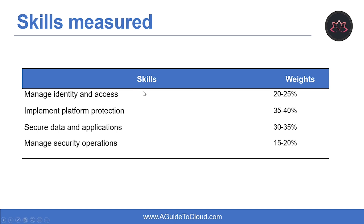When you sit for the exam, you will be measured on four primary skills: manage identity and access, implement platform protection, secure data and applications, and manage security operations. On the right-hand side, you can see the relative weight on each of these skills. The higher the percentage, the more questions you can expect from each topic.